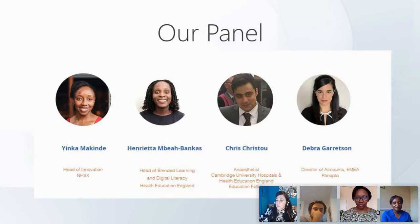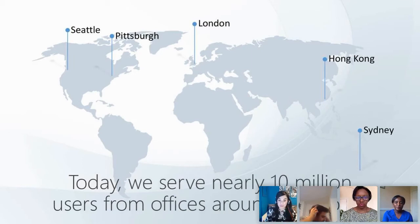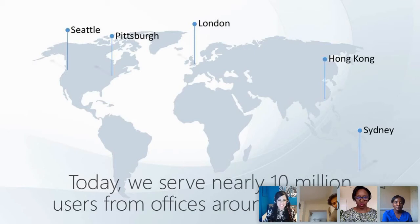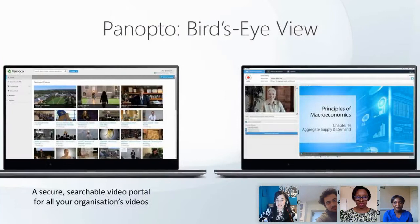Panopto serves almost 10 million end users across the globe, including 22 of the top 25 universities in the world such as Oxford, Cambridge, Harvard, MIT, Stanford, and Yale. We also work with large multinationals such as Google and Nike. I am based in our London office, serving all of our European customers.